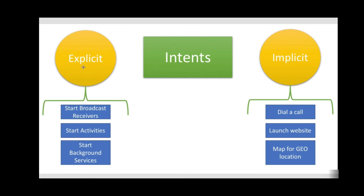An example of an explicit intent would be moving between different activities in the same application. An example of an implicit intent would be where we wanted to dial a number on our phone, but we don't want to build the capability of dialing a call in our own application. So we send out a message to the system asking if there is an application that can help dial a call. All of the applications installed on your phone with an intent filter that says it is able to dial a call will then respond. We will look in more detail at implicit intents later on — for now, we will start with explicit intents.